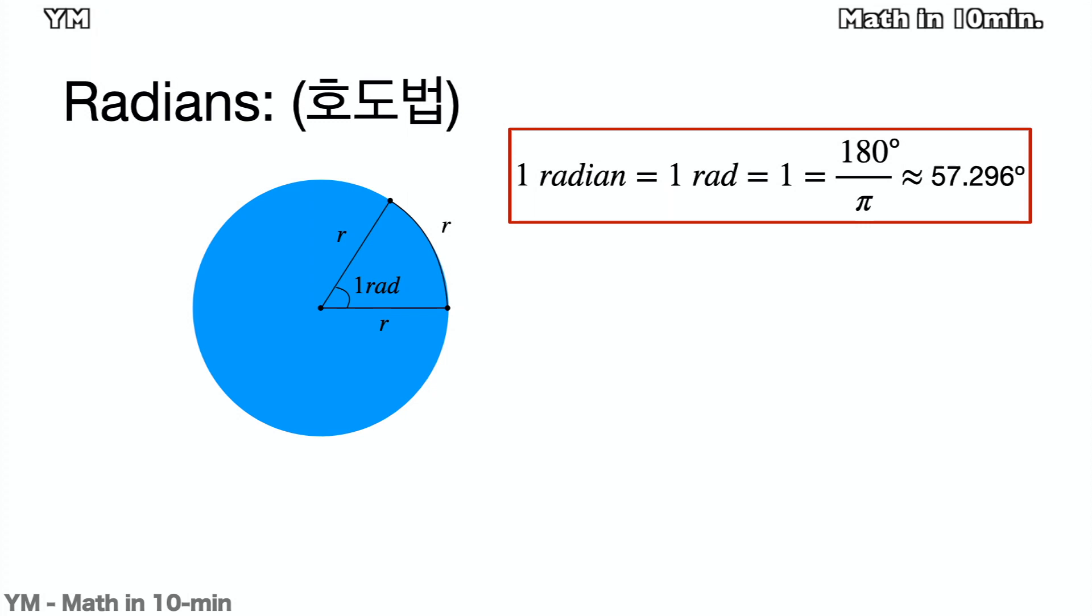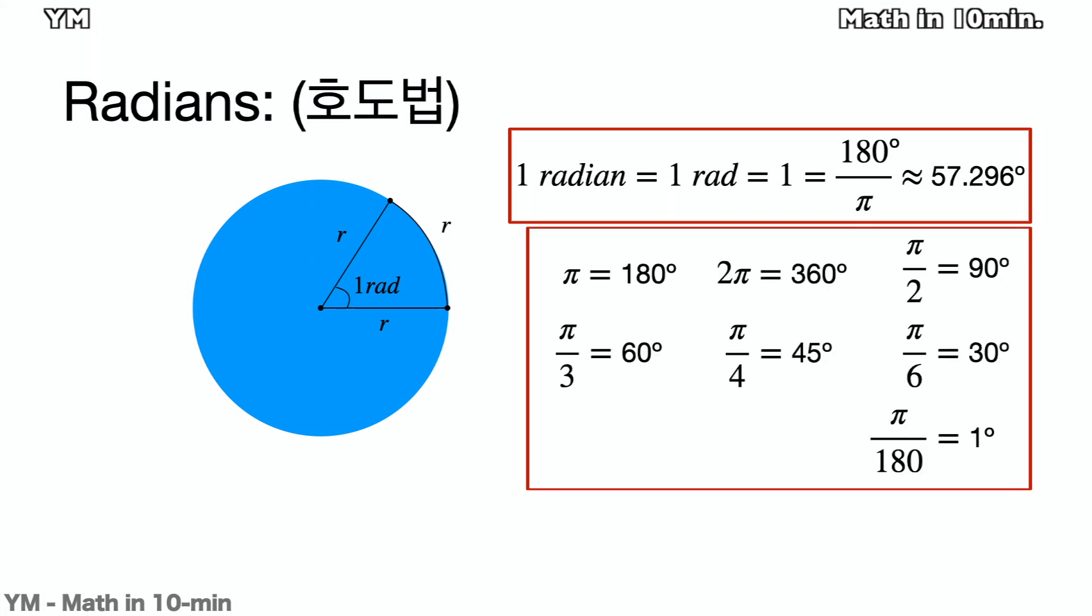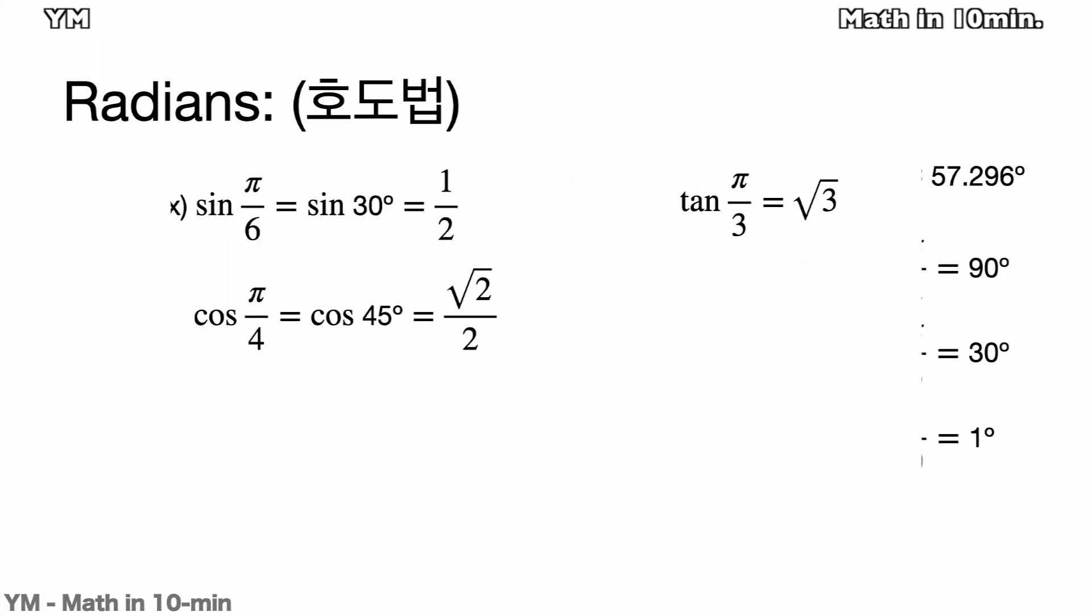1 radian or 1 in the angle is actually equal to 180 over pi degrees. Then the other degrees are equal to the following. Let's take a look at some examples. Sine pi over 6 is equal to sine 30 degrees, so it is 1 over 2. Cosine pi over 4 is equal to cosine 45 degrees, so it is square root of 2 over 2. Tangent pi over 3 is equal to tangent 60 degrees, so it is square root of 3.